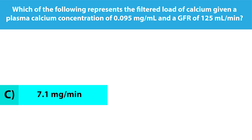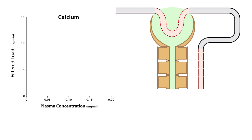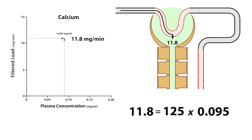The correct answer is 7.1 milligrams per minute. Now, if you use the filtered load formula, you should have come up with 11.8 milligrams per minute since the glomerular filtration rate of 125 milliliters per minute times the plasma concentration of 0.095 milligrams per milliliter equals 11.8 milligrams per minute.